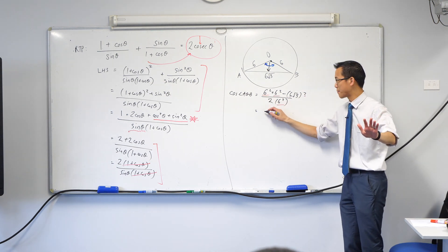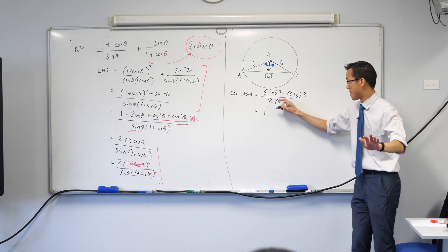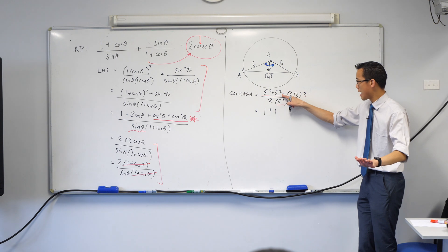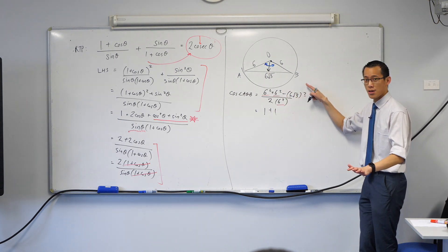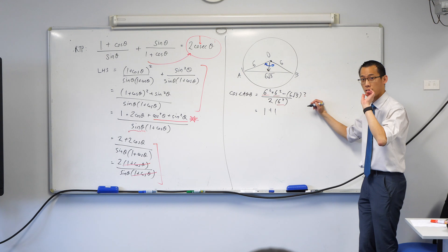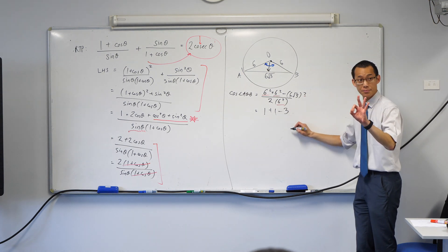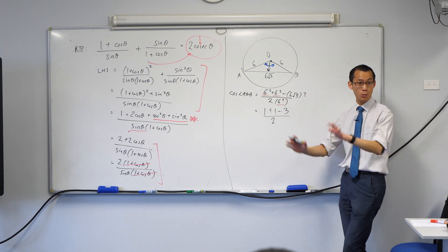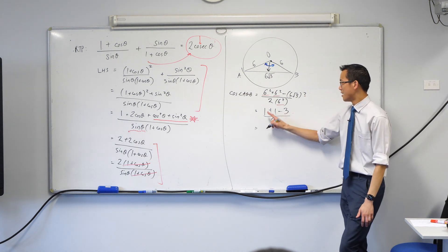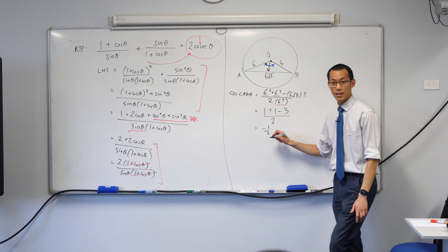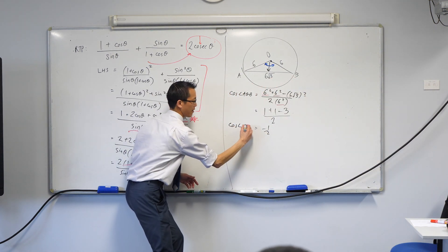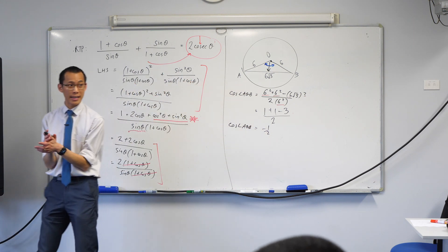This is what I end up with. That becomes a 1. That becomes a 1. This guy here becomes minus root 3 squared. Root 3 squared is just 3. And then I cancel the last six squared down the bottom. Look, no calculator. 2 minus 3 that's negative a half. So I've got cos of AOB. Now I'm not quite finished yet.